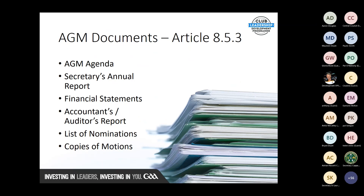The documents issued seven days before the AGM are: the AGM agenda, Secretary's Annual Report, the Financial Statement, Council and Auditor's Report, list of nominations, and copies of motions. Simon will deal later with the agenda for the AGM and what's entailed.